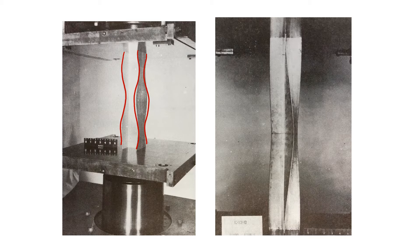On the right is a cruciform section — basically just a cross — and you can see the sweep in the flanges indicating the cruciform has twisted. You could interpret that as a local buckling mode of the flanges or as a torsional buckling mode of the cross section as a whole, and either interpretation would be appropriate.